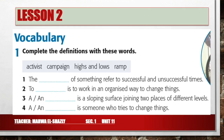The highs and lows of something refers to successful and unsuccessful times. To campaign is to work in an organized way to change things. A ramp is a sloping surface joining two places of different levels. An activist is someone who tries to change things.